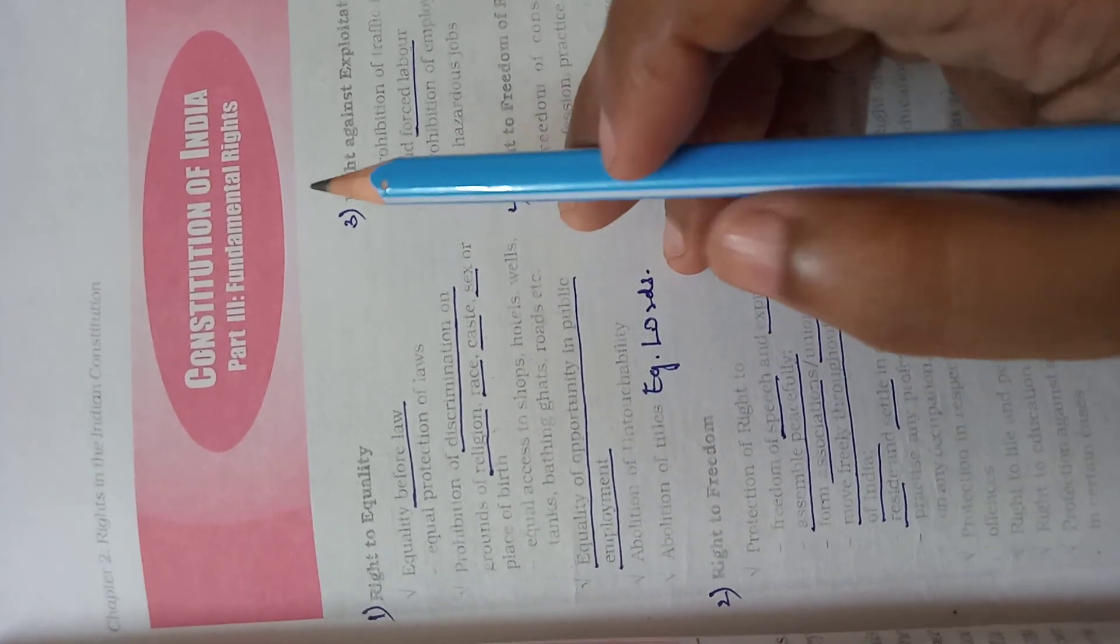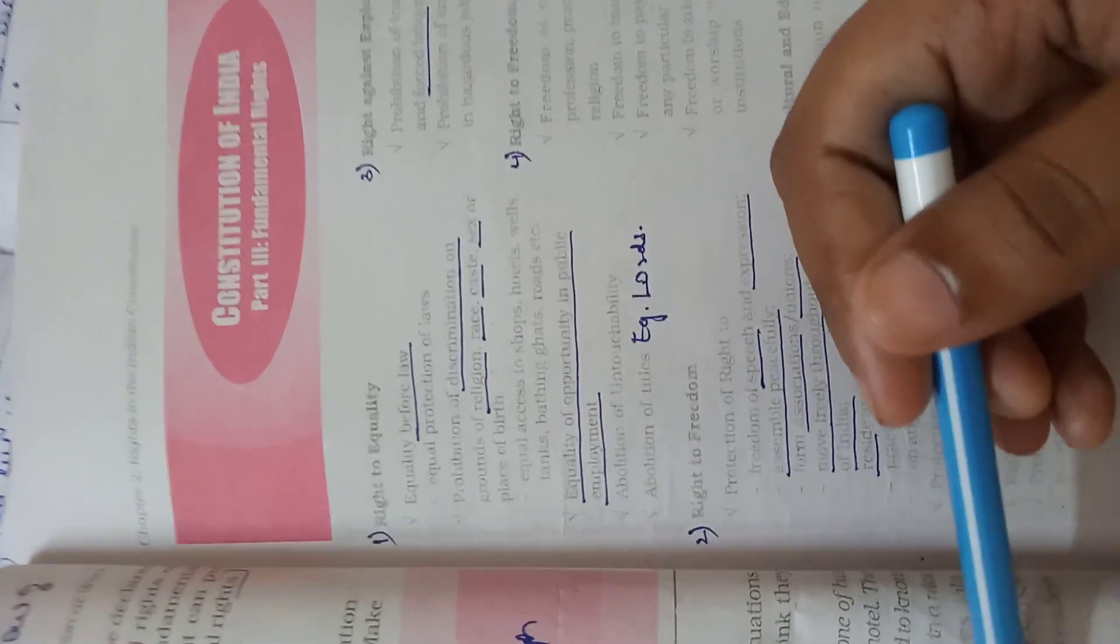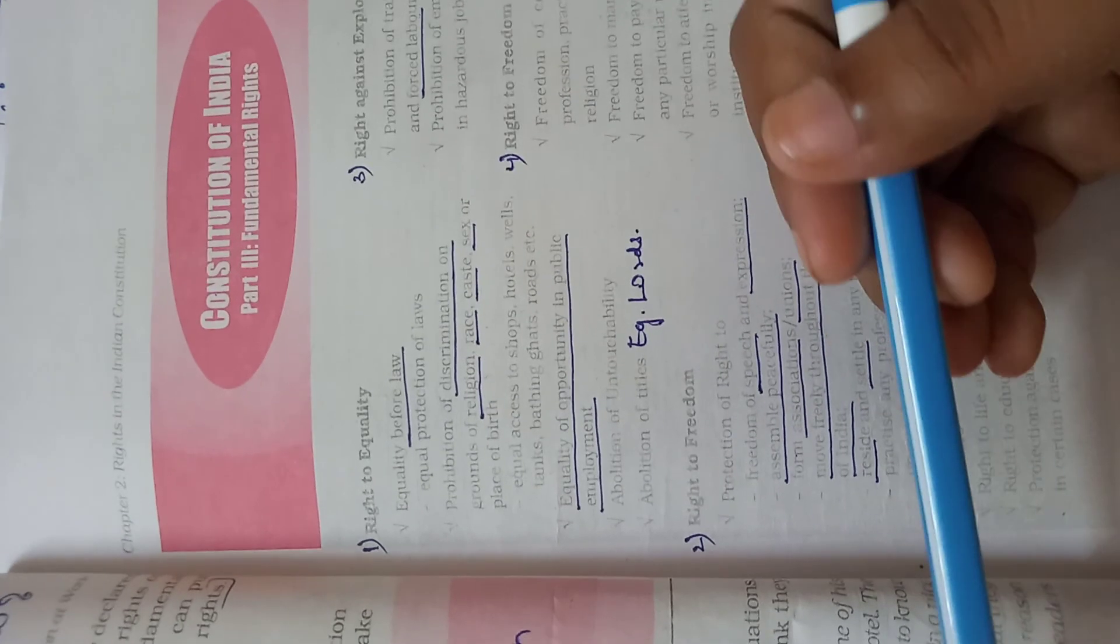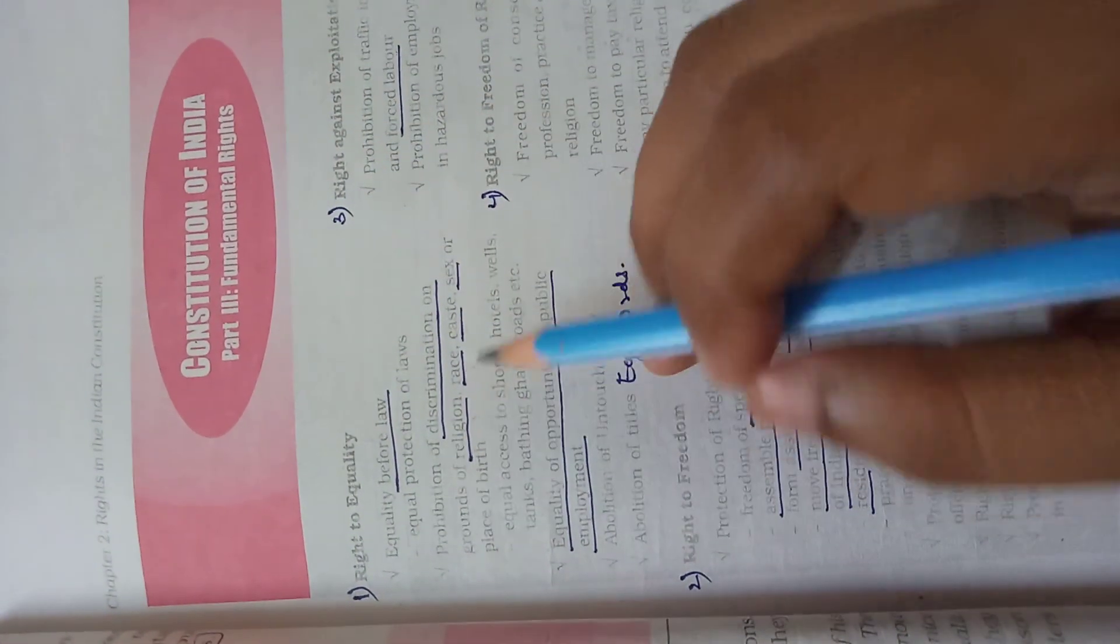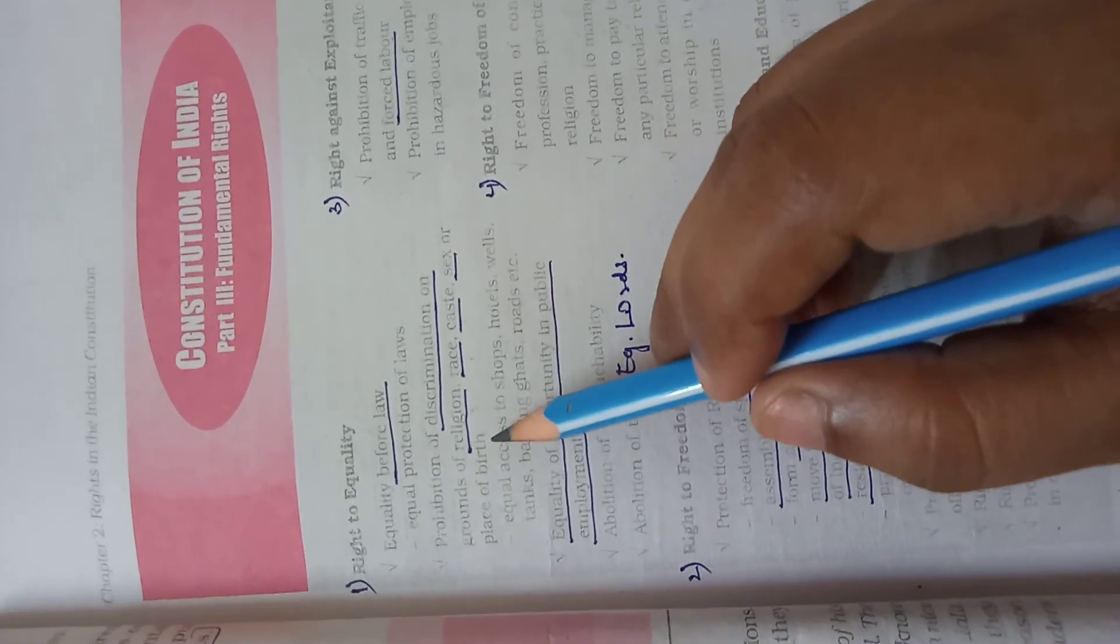On the basis of sex, that is on the basis of girls and boys. This example where female news reporters are not allowed to read news, right to equality says you cannot do that. And place of birth - you cannot demean someone based on their place of birth.